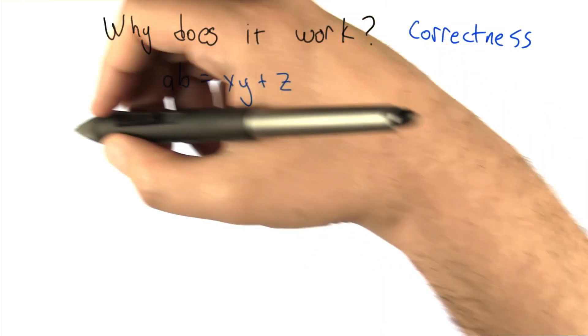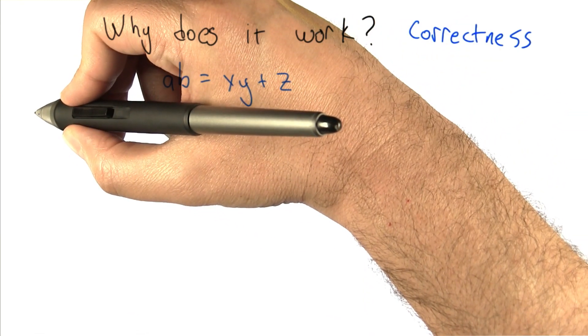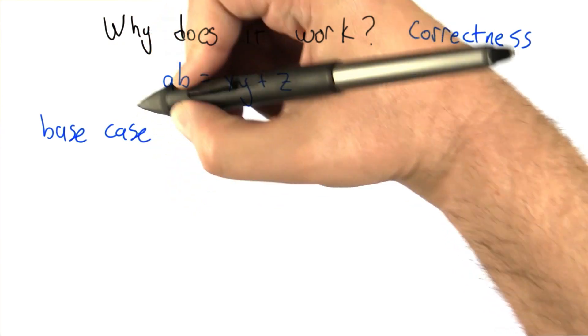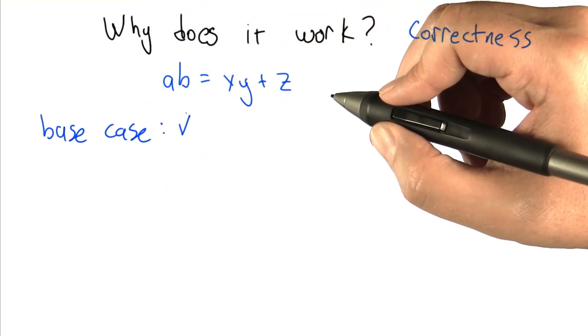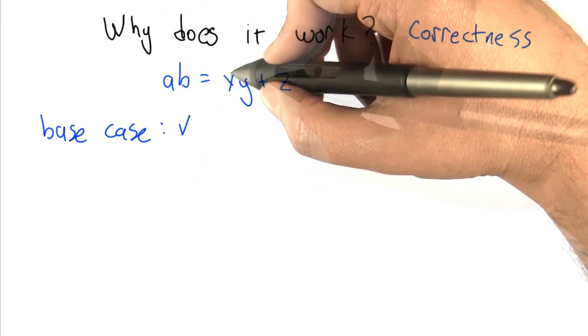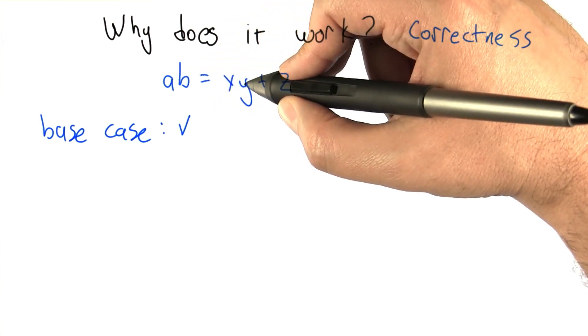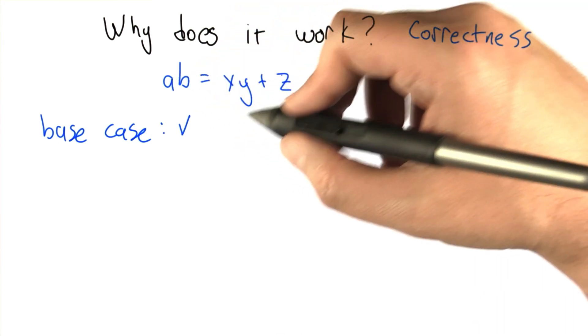Can we prove that this is the case? Again, we need to do two things. We need to say that it starts off with that being the case, and that's the same exact argument that we had in the naive algorithm because x starts out as a, y starts out as b, and z starts out as zero. So that holds.